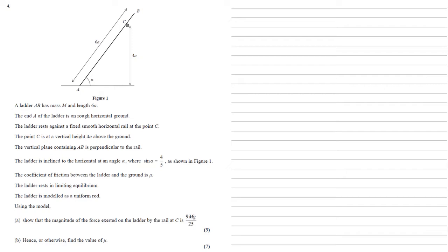Using the model we need to show that the magnitude of the force exerted on the ladder by the rail at C is 9mg over 25.